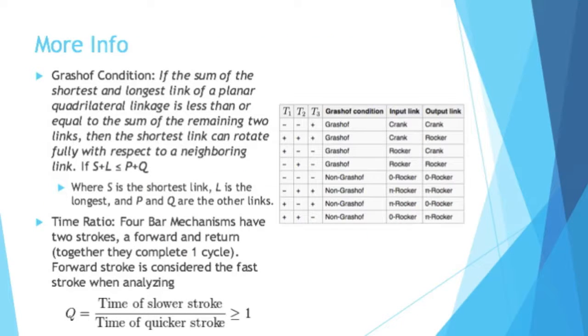There is something called the Grashof condition. If the sum of the shortest and longest link of a planar quadrilateral linkage is less than or equal to the sum of the remaining two links, then the shortest link can rotate fully with respect to a neighboring link. Yes, there's all these crazy variations, but engineers over the years have figured out certain rules and groupings for four-bar linkages. So if the shortest and the longest linkages are less than or equal to the other two, then S being the shortest link can do a full rotation.